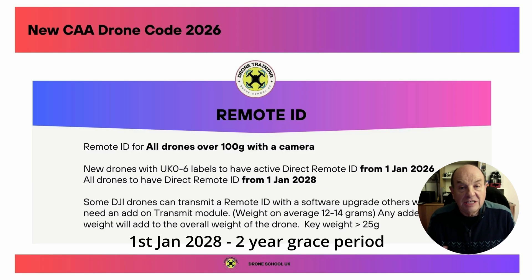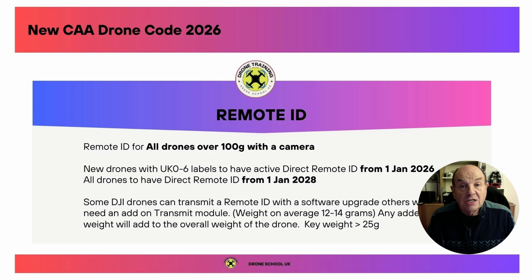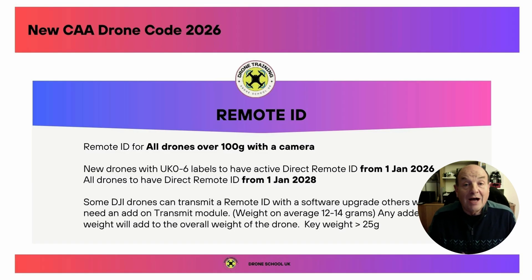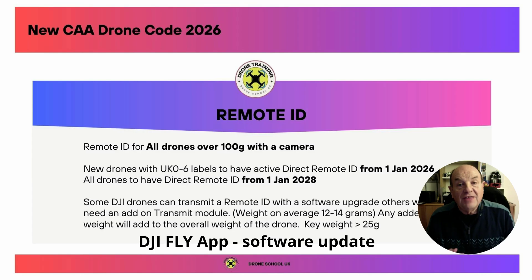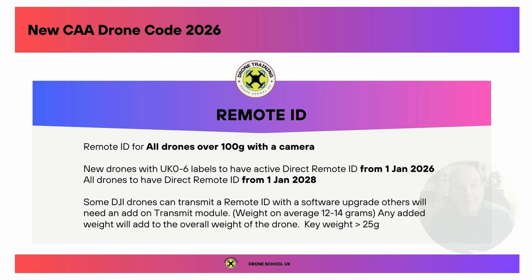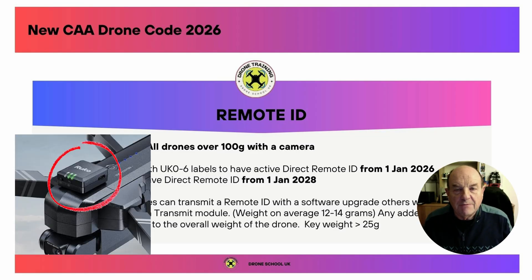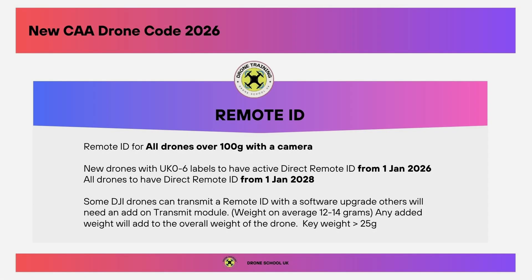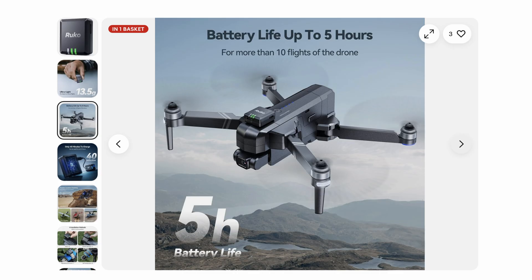On DJI drones, the remote ID is already built into the firmware and software, so it will be a software upgrade. Some older drones like the Mavic 2 or the Air 2 will not have it, but if the drone runs on the DJI Fly app, most will receive a firmware or software upgrade. Older DJI drones will need some form of external remote ID transmitter attached, and other drones will need a transmitting remote ID module attached — normally adding between 12 and 14 grams to the weight of the drone, which could push it over the 250 gram threshold.